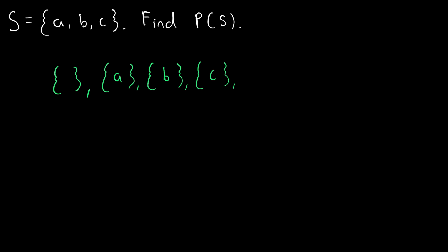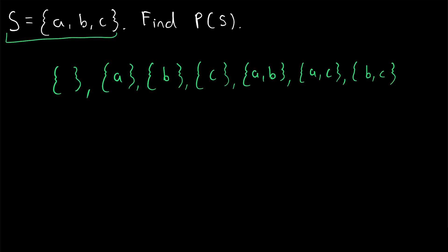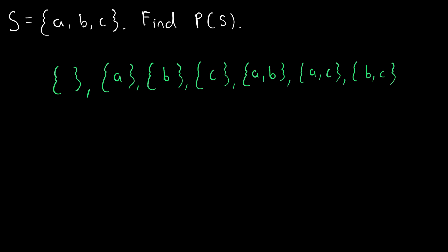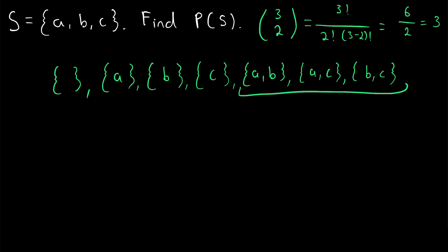Moving on to the two-element subsets: the set containing A and B is a subset of S, the set containing A and C is a subset of S, and the set containing B and C is a subset of S. To check your progress, you can use a binomial coefficient. The number of two-element subsets of S is three choose two — the number of ways to pick two objects from a collection of three. That equals three factorial divided by two factorial times one factorial, which works out to six divided by two, equal to three. And we've got three two-element subsets, so we're good.